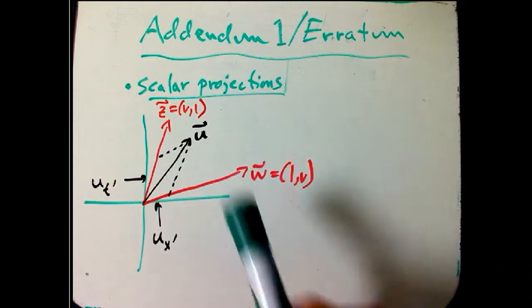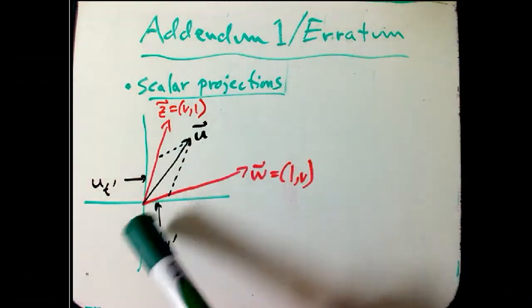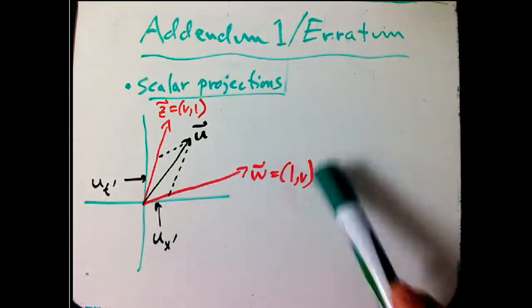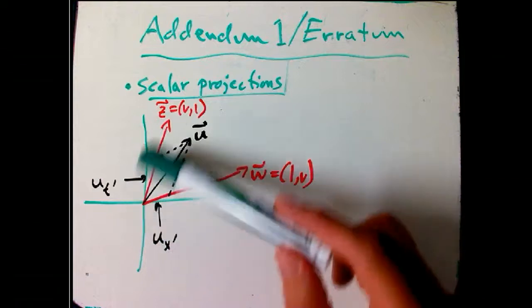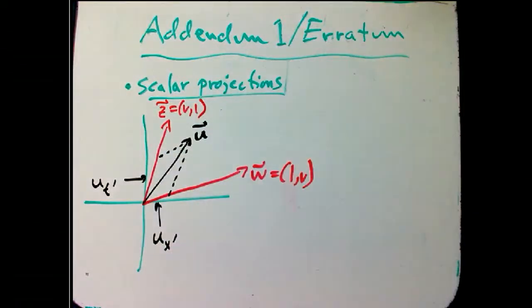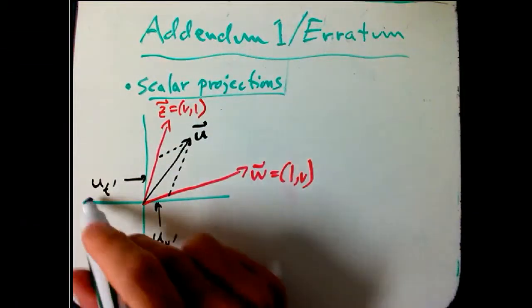Here's the setup we have. We have a vector u, and we're trying to project it onto w, which is (1,v), and then also onto z, which is (v,1), to get these numbers ux prime and ut prime.